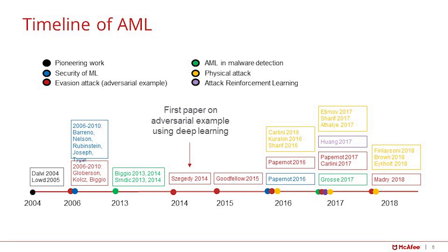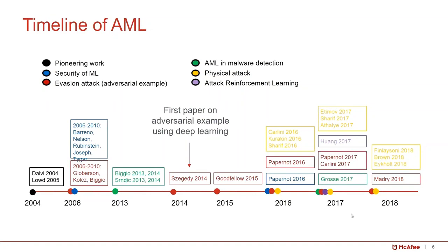In addition to these digital attacks — which means modifying the image space at the pixel level — there are also physical attacks, which means the attacker may not have access to the digital system. There are multiple papers on physical attacks, including UC Berkeley's paper on traffic signs, CMU's paper on facial recognition, and MIT's paper on 3D objects. UC Berkeley also has a paper showing that reinforcement learning, another mechanism of machine learning, is also vulnerable to this type of attack.